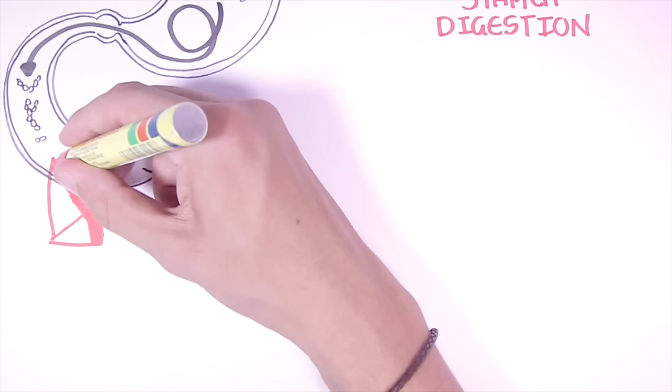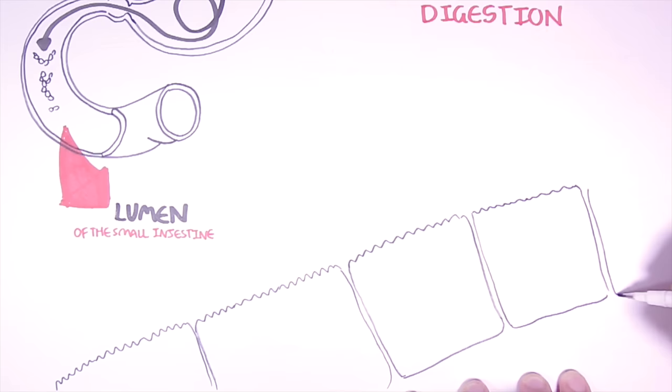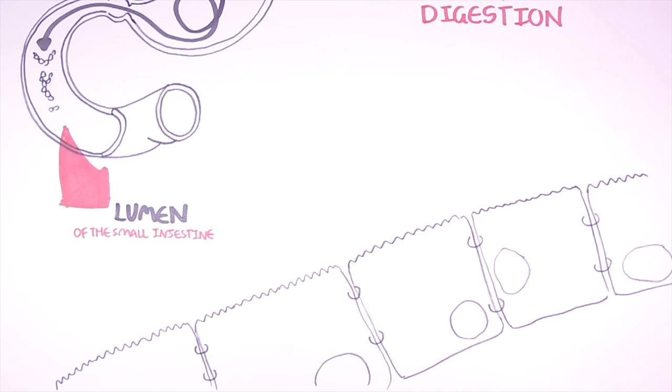Now let's zoom into the small intestine and see what happens with the starch. So we are zooming into the lumen of the small intestine. Within the lumen of the small intestine we can find the cells. The cells of the intestine known as enterocytes. The enterocytes are also called the absorptive cells because they absorb the nutrients.